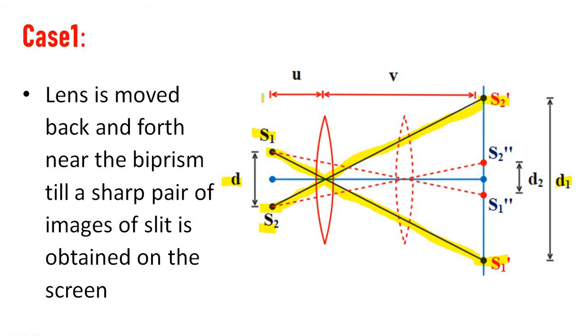The distance from the source to the lens is U, and distance from the lens to the screen is V. This is the first condition.